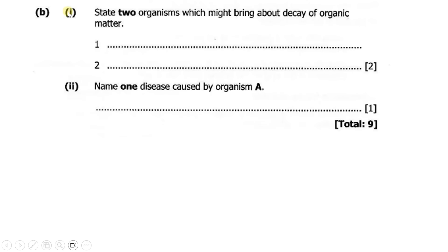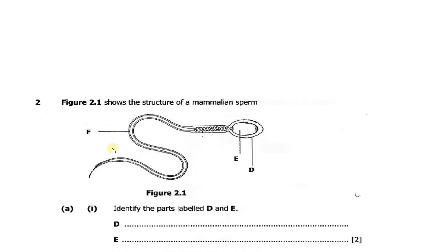Then part B, part 1 says: state two organisms which might bring about the decay of organic matter. So you need to give two organisms here. Then part 2 says: name one disease caused by organism A.